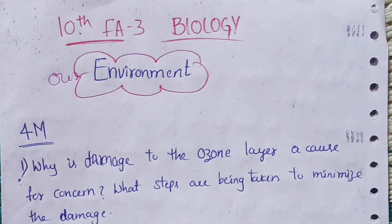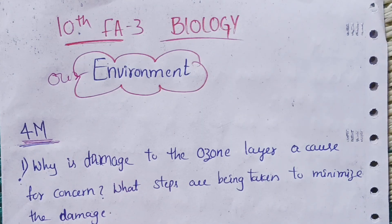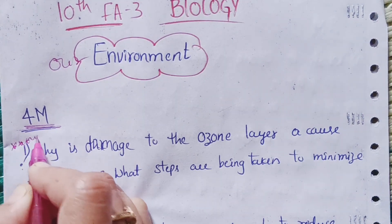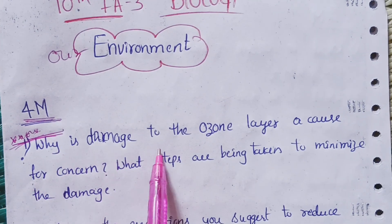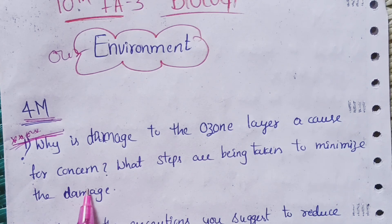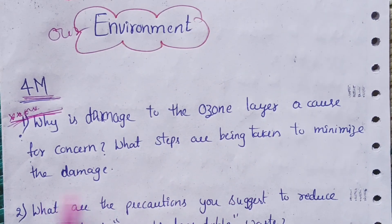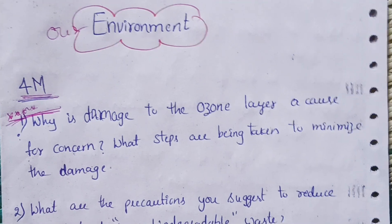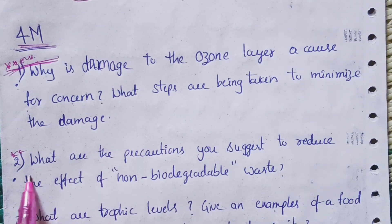Let's start with the four-mark questions from 'Our Environment.' The first and topmost important question is: Why is damage to the ozone layer a cause for concern? What steps are being taken to minimize the damage? This is a very important question — don't skip it.